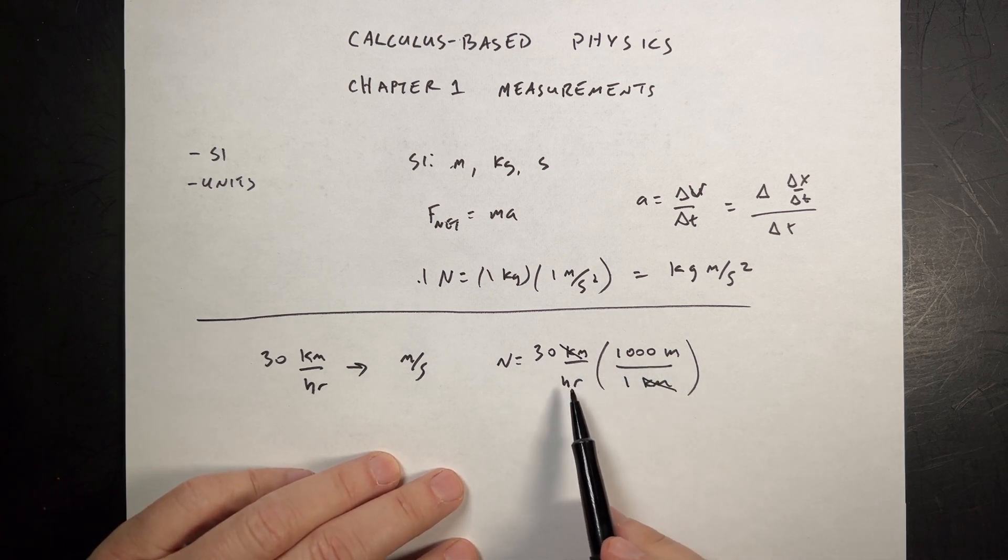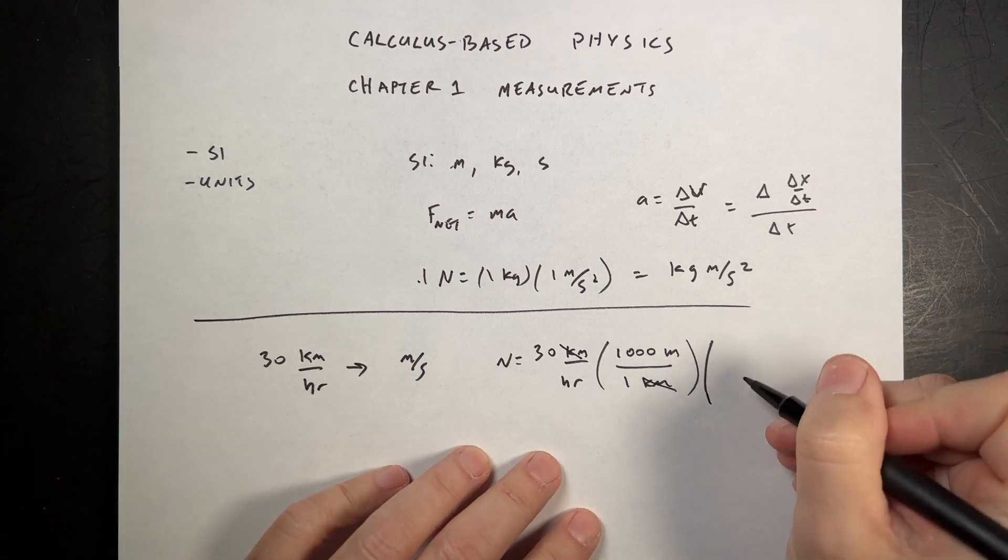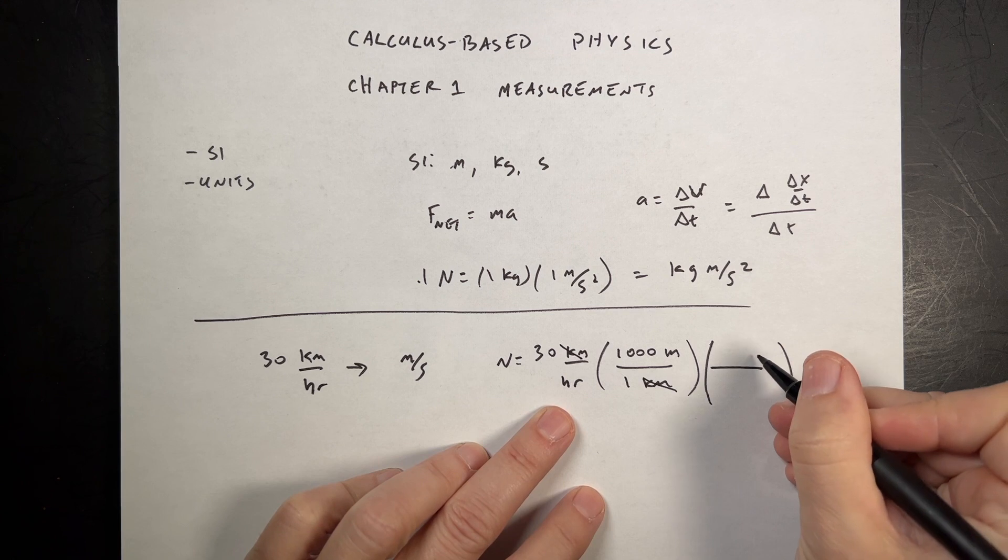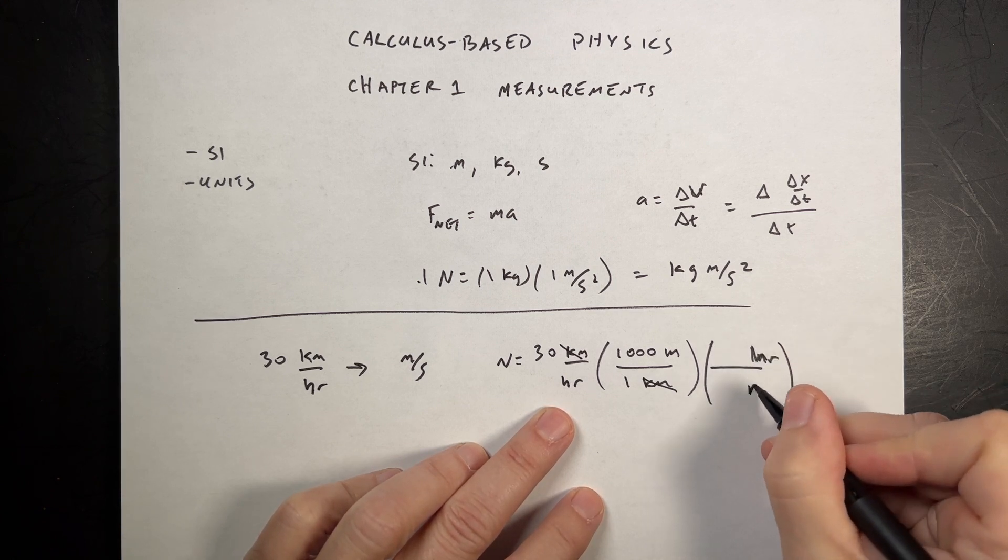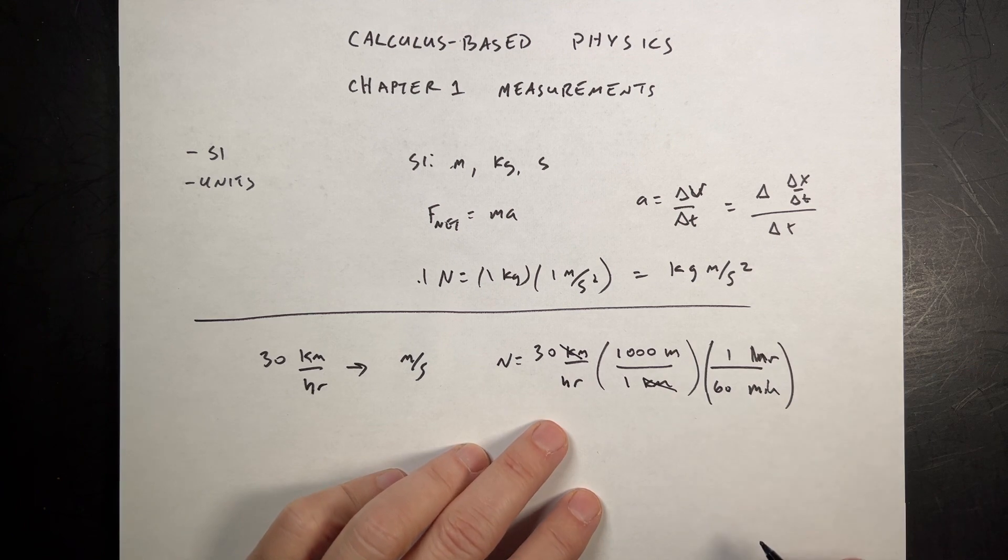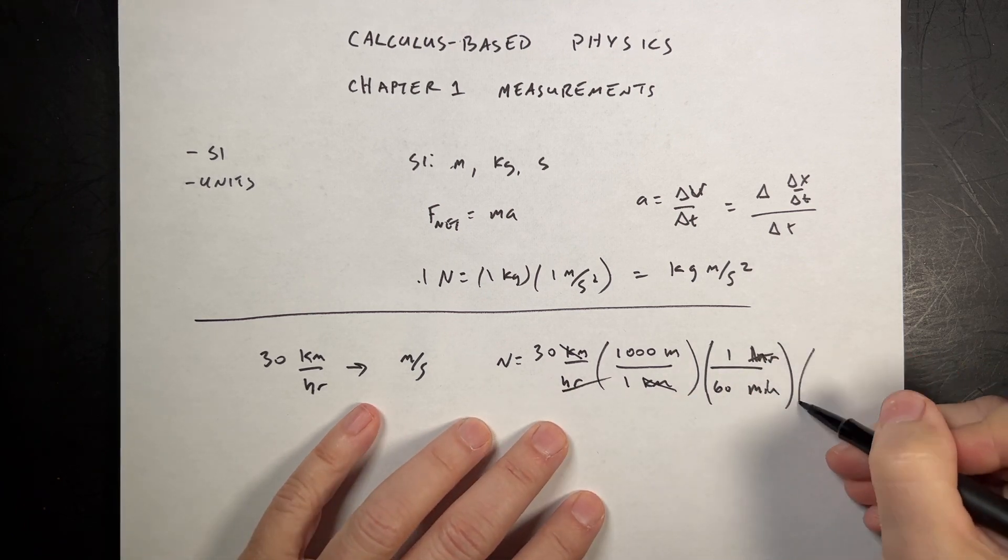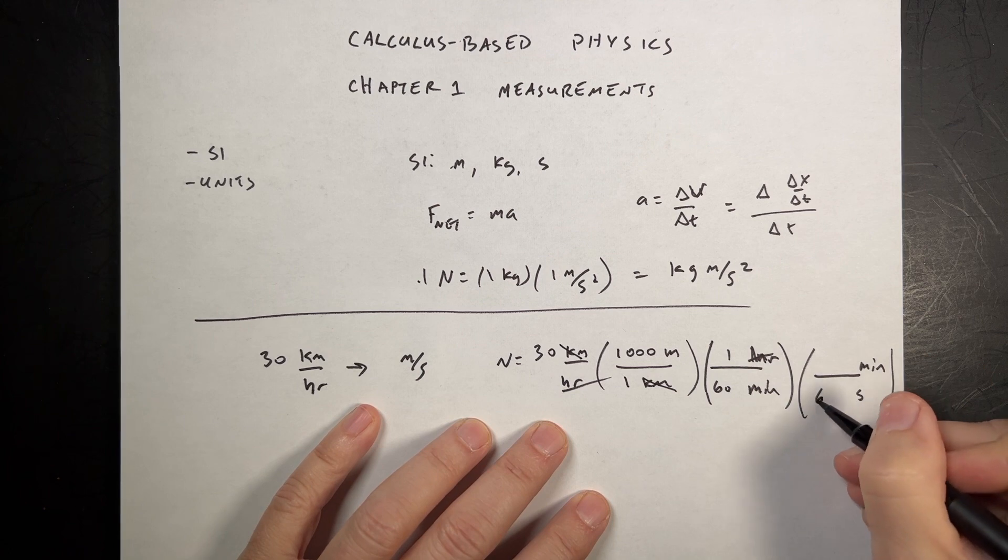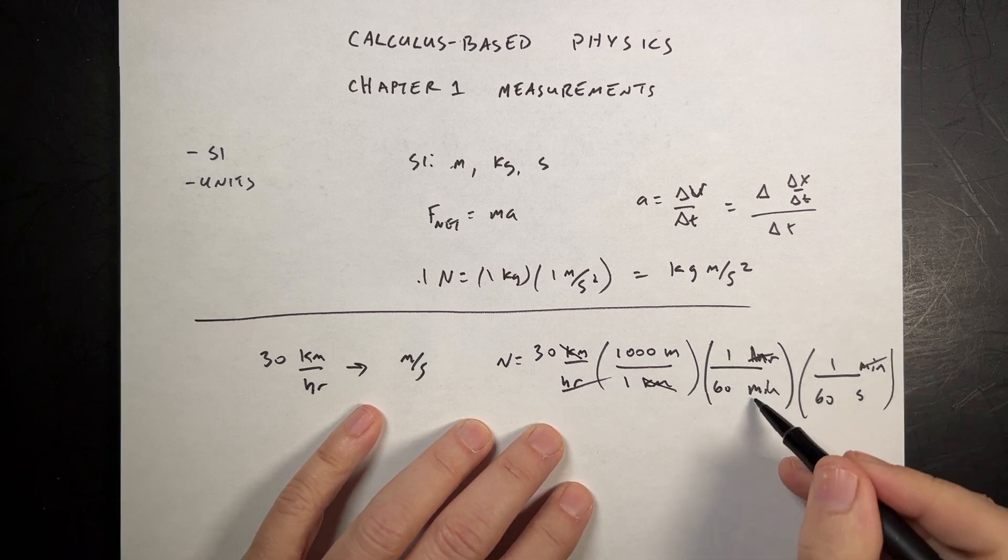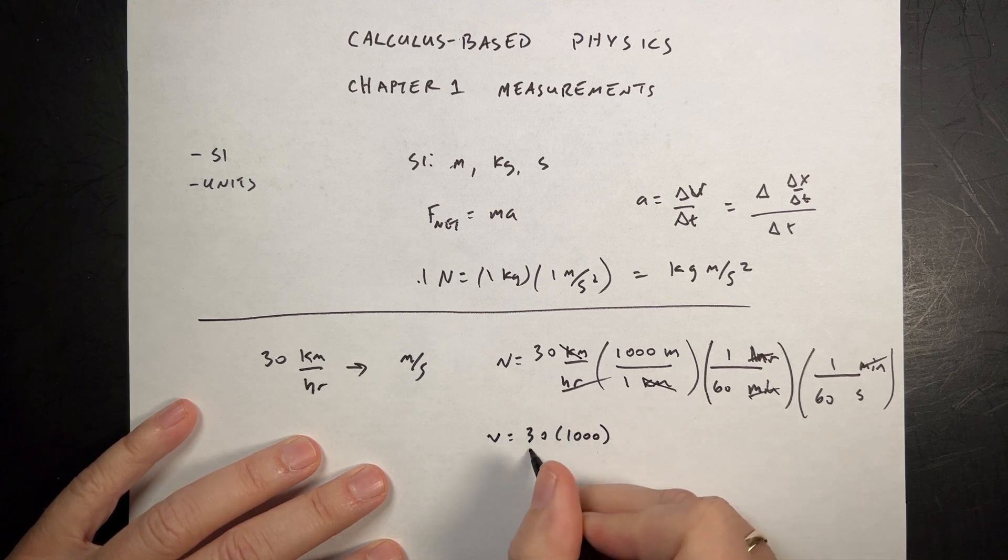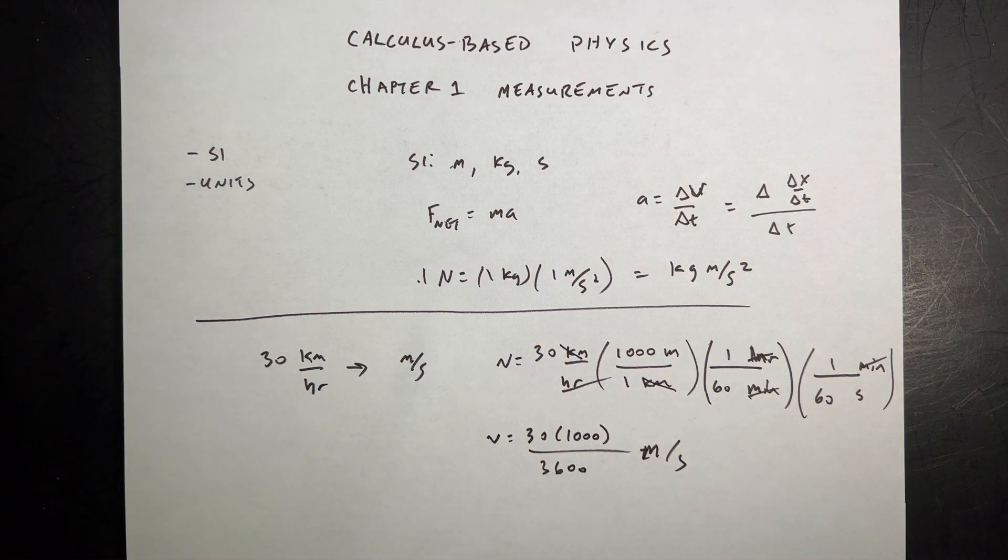So now I have 30 times 1,000 meters per hour. Now I need to convert hours into seconds. I could convert hours into minutes. So I know that I want to put 1 over 1, and I want the hours on top. Hour. And I want the minutes on the bottom. Divide it by 60 times 60, which is 3,600. And that's in meters per second. And I didn't do the math, so I apologize for that.